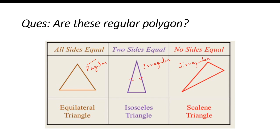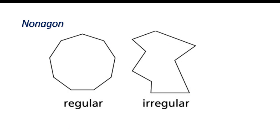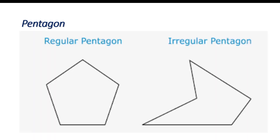In a scalene triangle, the three sides are of different lengths and are not equal. In an isosceles triangle, only two sides are equal. Here we have a nonagon — this is a regular nonagon. And this one is irregular.